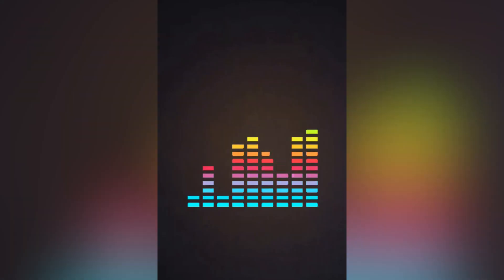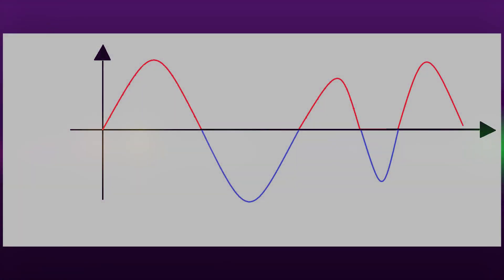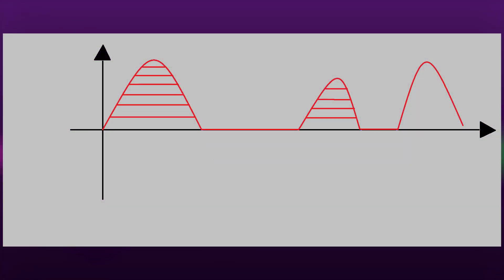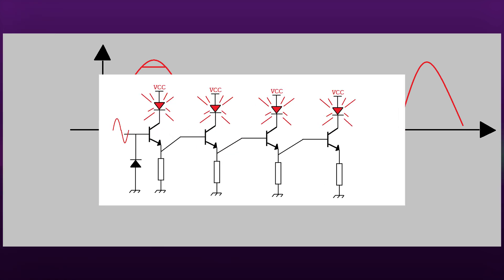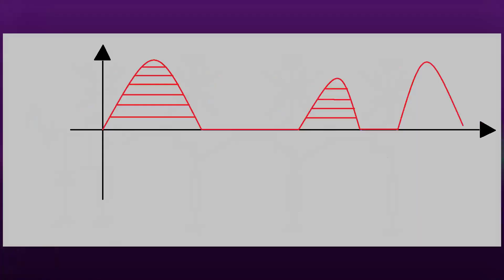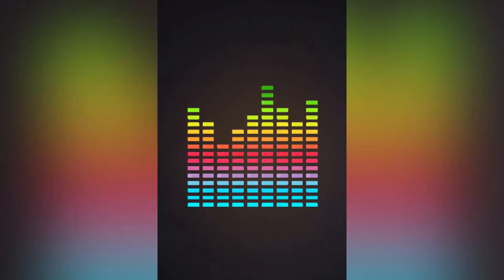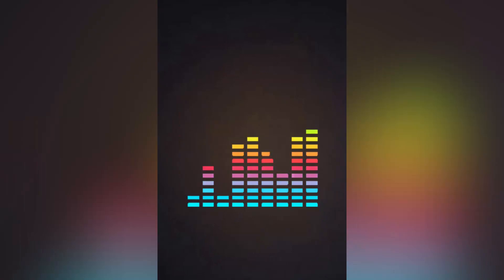How do we make an equalizer? A sound wave is very similar to a sine wave. First, we remove its negative part and divide its positive parts. A transistor circuit like this can do this. Each of these parts is 0.7 volts. Loud sounds activate more transistors and turn on their LED.